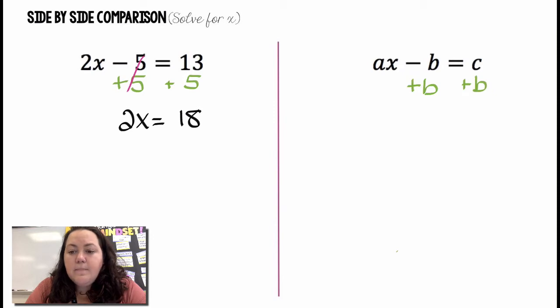Then on this side on the right if I wanted to get x, if I'm solving for x, I want to get x by itself, first thing I would do is add b to both sides. That would cancel over there and I would have ax equals c plus b. I can't add c and b and get a simpler thing so I'm just going to leave it because they're not like terms.